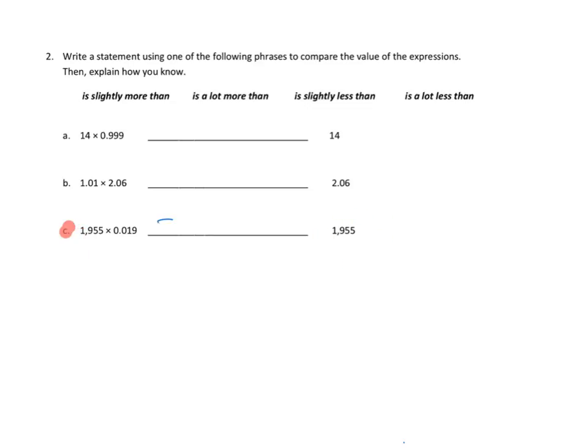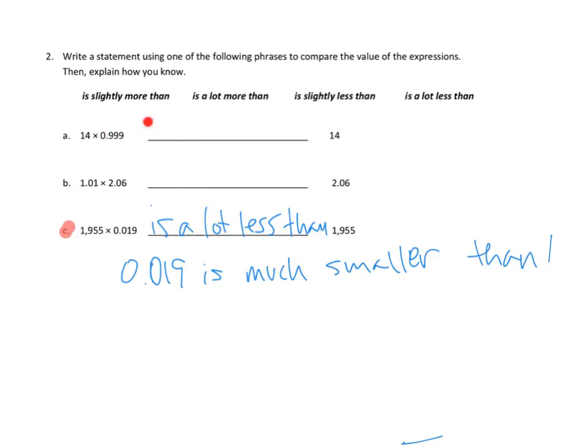So I think that the product here is going to be a lot smaller than this. So let me say, is a lot less than. And how do I know? Well, 0.019 is much smaller than 1, right? That's how I know. If it was close to 1, if it was a number like 0.999, then I would say it's going to be smaller, but not much smaller. And if it was a number like this, it was going to be a lot larger, because this means that this number is going to more than double. But I think this is going to be a lot smaller than the original number.